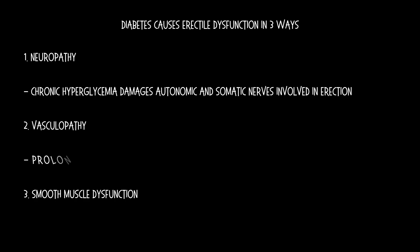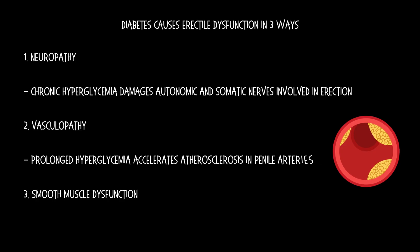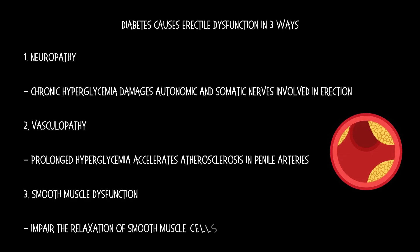Prolonged hyperglycemia accelerates atherosclerosis in penile arteries, which manifests as diabetic vasculopathy. High glucose levels also impair the relaxation of smooth muscle cells in the corpora cavernosa.